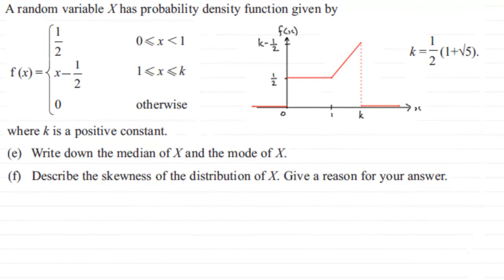Now for the last part of this question, parts E and F. In E we've got to write down the median of X and the mode of X. And then in F we've got to describe the skewness of the distribution of X and give a reason for our answer. Well, for part E anyway...